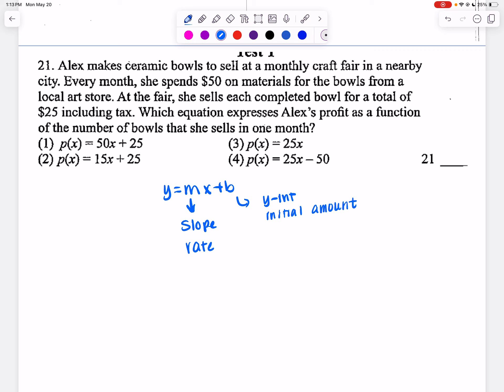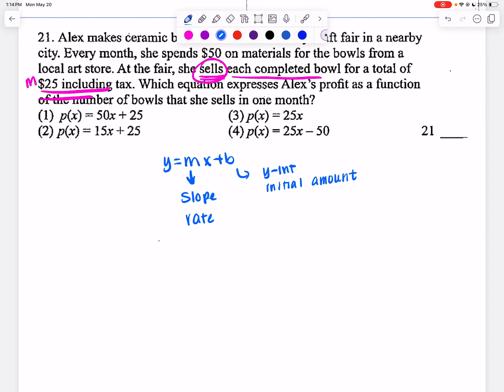The number that first stands out is $25 including tax. She's selling each bowl for $25. If I sell one bowl, it's $25. If I sell two bowls, that's $50. So the slope is going to be $25. When I go back to my equation, I'm going to write Y equals 25X.